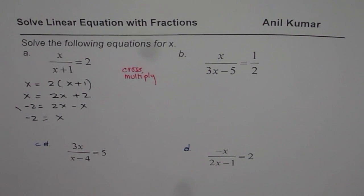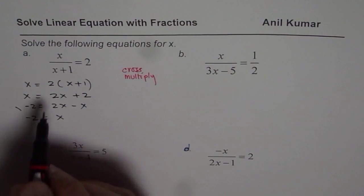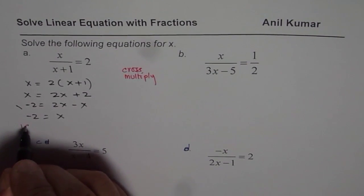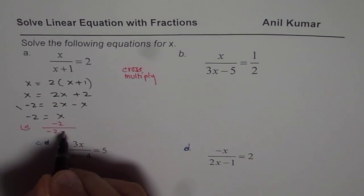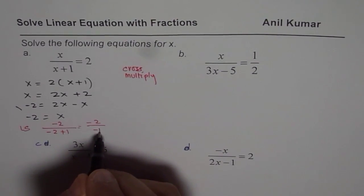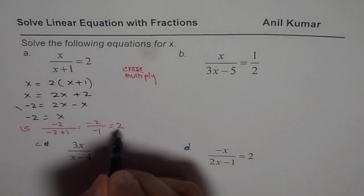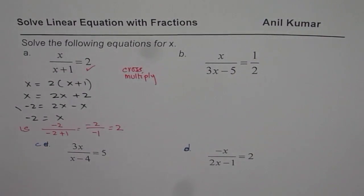That becomes our solution. You can actually check your solution. x is -2. So on the left side, we'll put -2 for x divided by -2 + 1. So we get -2 divided by -1, and that is indeed equals to 2. As expected, that is how you should be solving.